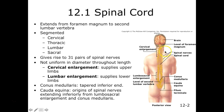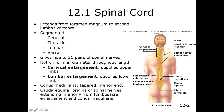Our spinal cord is going to give rise to 31 pairs of spinal nerves. You can remember that by thinking of 31 flavors at Baskin-Robbins. Notice that they're paired, so whatever we have on one side, we have on the other side — everything is symmetrical.